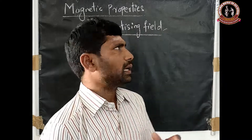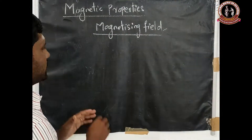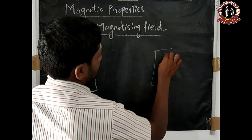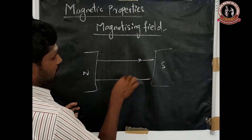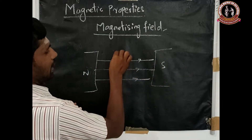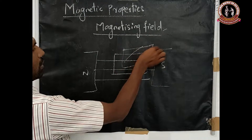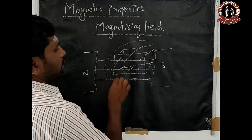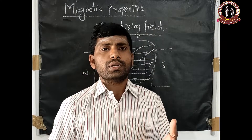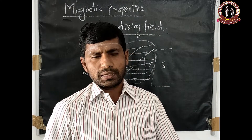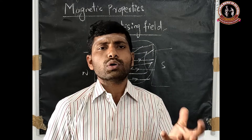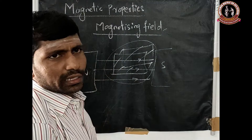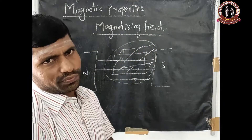The first property is the magnetic field. A north pole and a south pole produce a magnetic field between them. When a non-magnetic material is placed in this magnetic field, the non-magnetic material acquires magnetic properties. The magnetic field used to magnetize a specimen is called the magnetizing field.